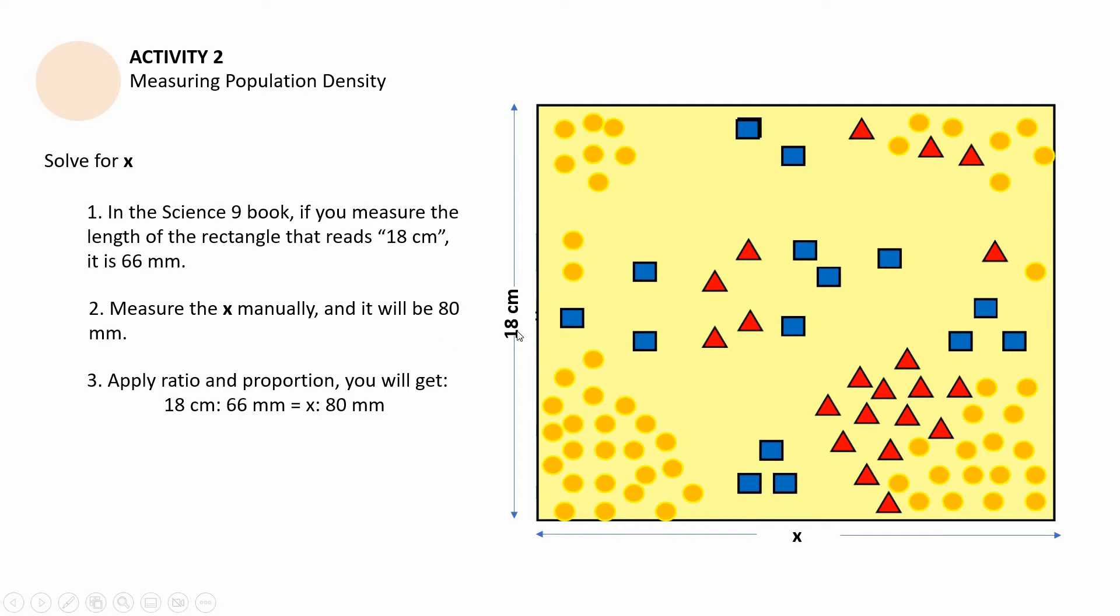So 66 millimeters is equal to 18 centimeters that is scaled in our book. So now, this width that we called x - we called it x - we also measured it manually. So the 18 centimeters is given, but x is not given. The 18 centimeters when you measure it manually, you get 66 millimeters. Now, what would we get if we measured this x manually? So in our experience, it would be around 78, 83, or 82. And the average is going to be 80 millimeters. So that means 18 centimeters is equal to 66 millimeters, and then the unknown x is equal to 80 millimeters. So what we need to know is the value of x. If 66 millimeters was scaled down into 18 centimeters, what would be the value of 80 millimeters scaled down?